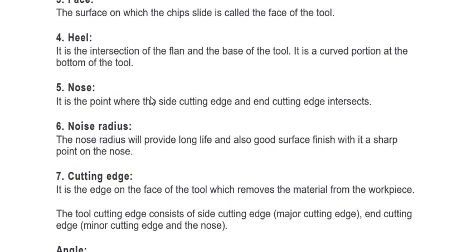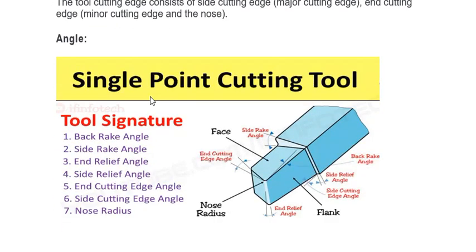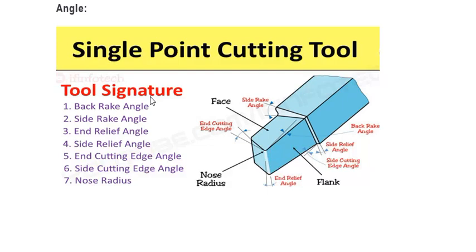The back rake angle can also be zero. For zero rake angle, a flat rake face is used. You need to remember for which material positive, negative, or zero rake angle is applied — this is an important question.